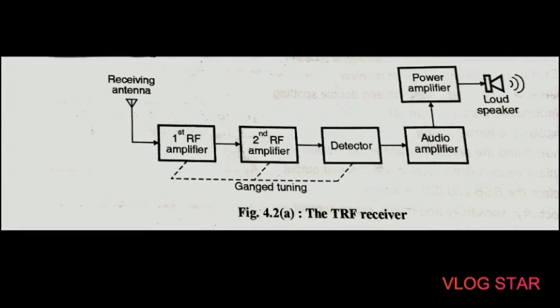Welcome to the channel. In the previous chapter we learned about the different types of AM, their generation and transmission. In today's lecture we will see how to receive them at the receiver. Signals from various transmitters at different frequencies are present, and noise is also present. The receiver is expected to receive the wanted signal from this crowd of signals, and thus the function that the receiver must perform.